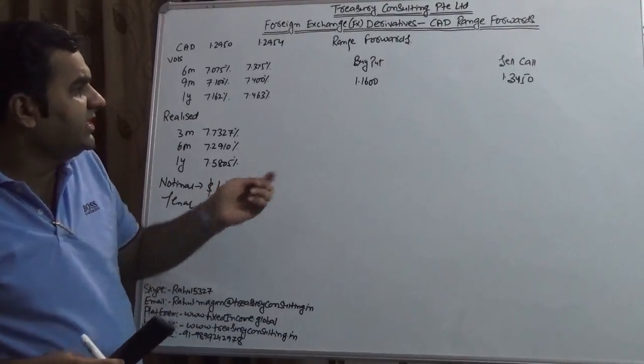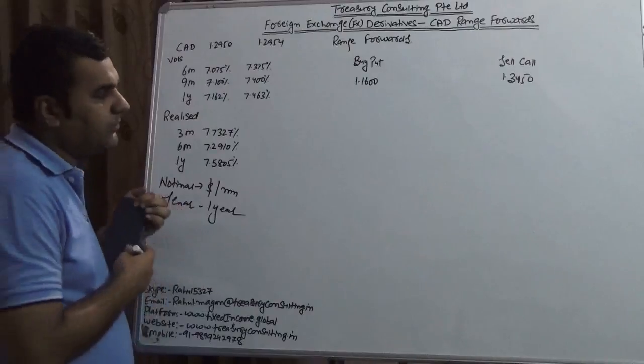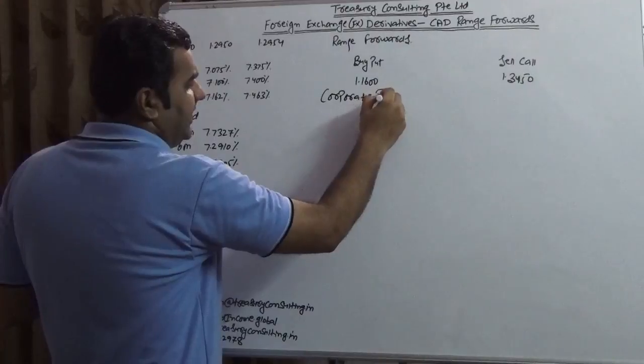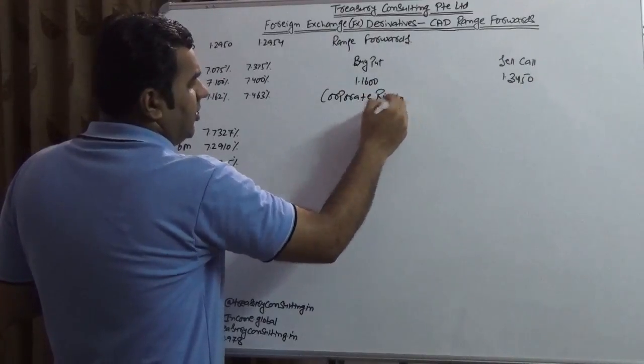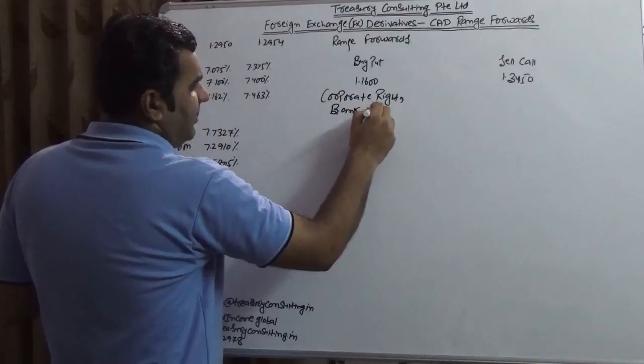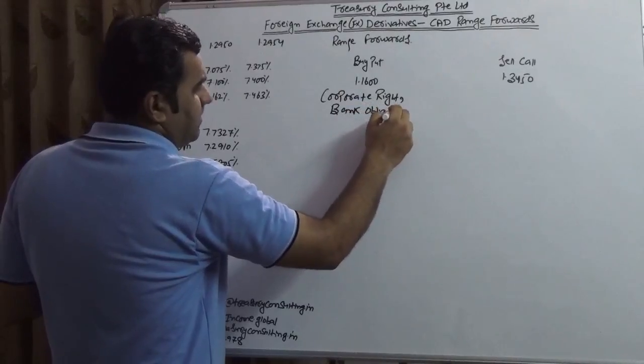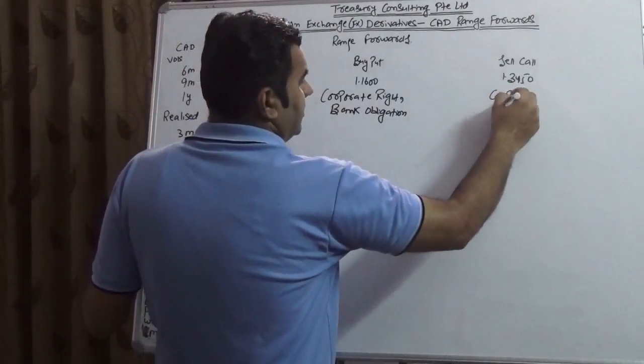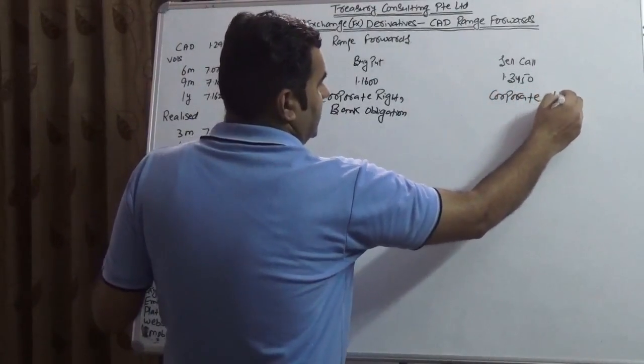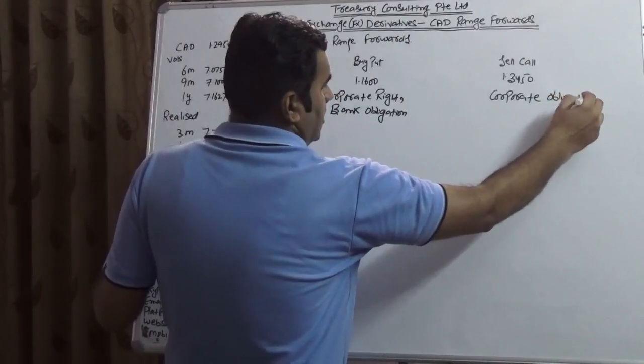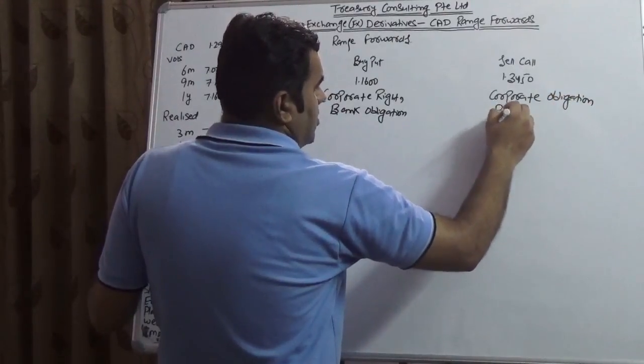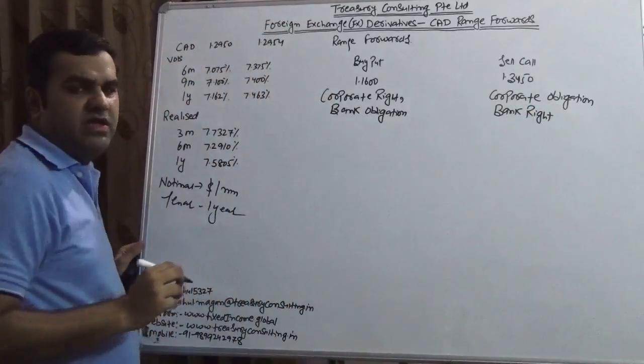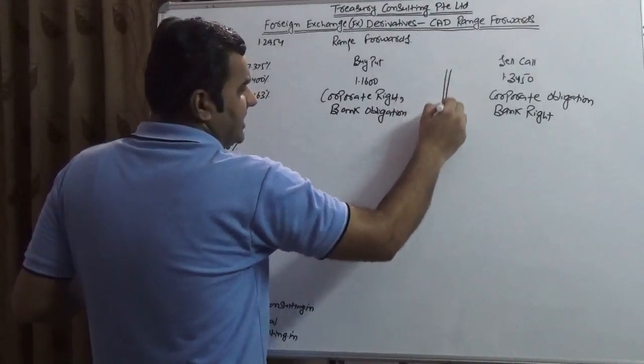So this is a range forward. Now buy put means I'm writing here, buy put means that the corporate is having a right, on the contrary the bank would have an obligation. On the other side, sell call means the corporate would have obligation, while the bank is having a right. In between we have what we always refer to as the market.